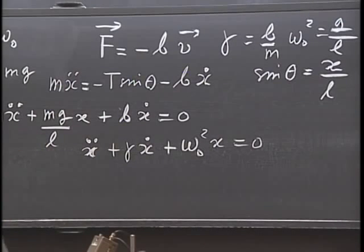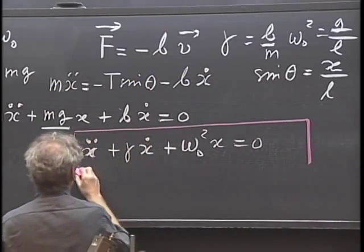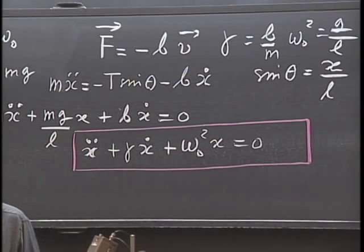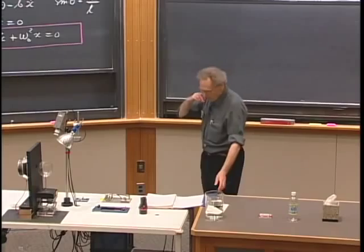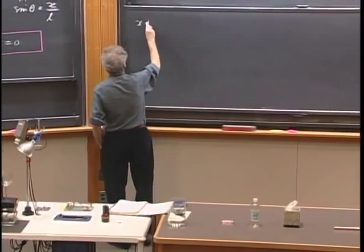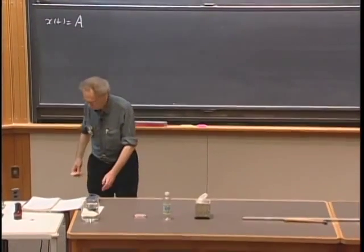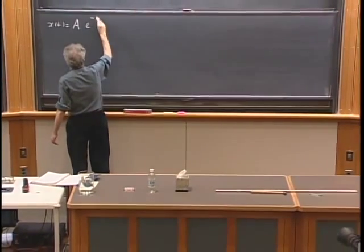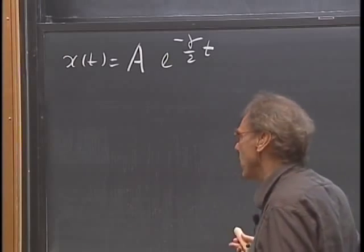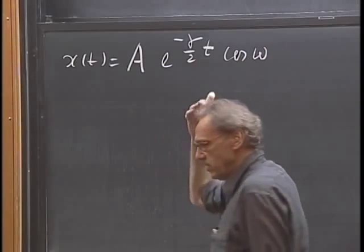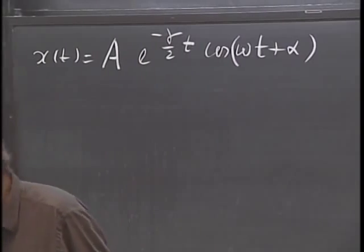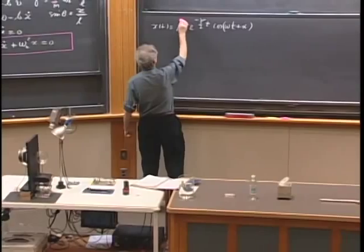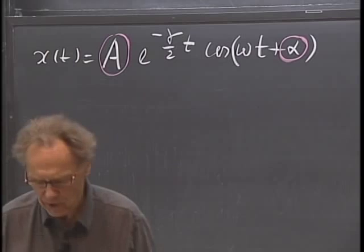That is the differential equation you will recognize. I would never want you to derive the solution during an exam. The solutions are given on your formula sheet. So x as a function of time is an amplitude times e to the minus gamma over 2 times t, times cosine of (omega t plus some phase angle alpha). If you know the initial conditions, you can find the amplitude and the angle alpha.